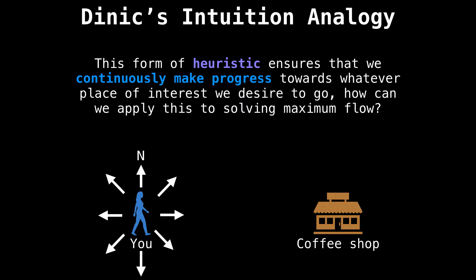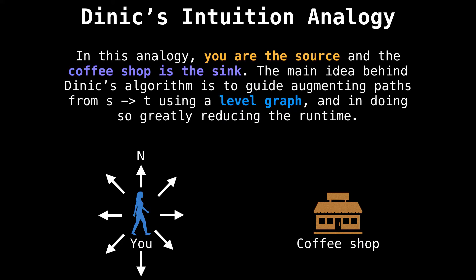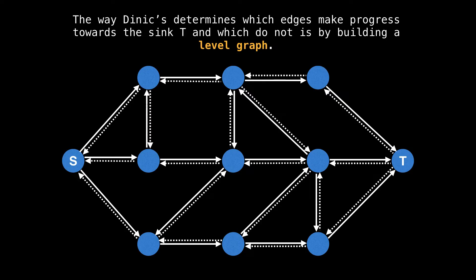So how can we apply this concept to solving the maximum flow? In this analogy, you are the source node and the coffee shop is the sink. The main idea behind Dinic's algorithm is to guide augmenting paths from the source to the sink using a level graph and in doing so greatly reducing the runtime. The way Dinic's determines what edges make progress towards the sink and which do not is by building what's called a level graph.